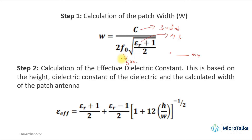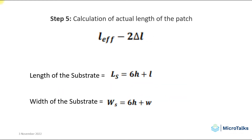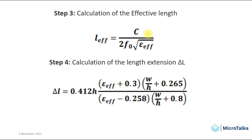Next, we go for the equation to find out the length of the patch. The length L equals the effective length L_eff minus 2×ΔL, where ΔL is the fractional extension length. We don't yet know the values of L_eff or ΔL, so we need to find out these two variables separately.